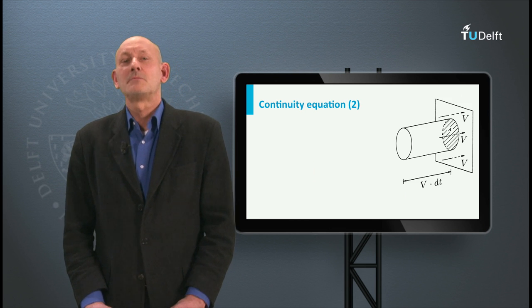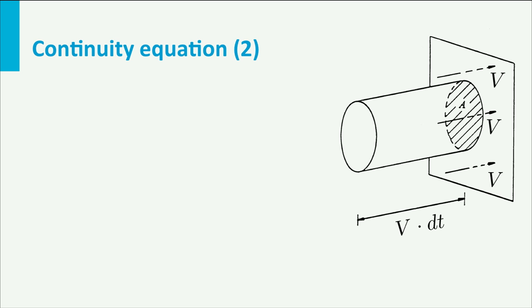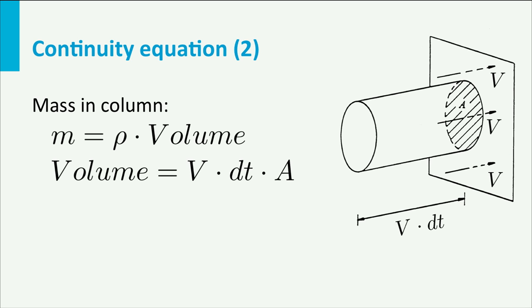Now let us look at the column of fluid flowing through an area A with a steady velocity V in a time span dt. The mass in the column is the density rho times the volume. The volume of this column is A times the length, which is V dt.